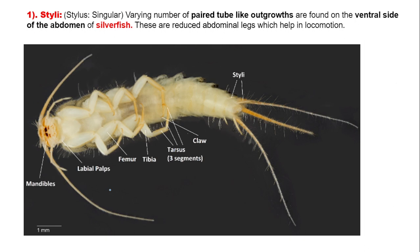A varying number of paired tube-like outgrowths present on the ventral side of the abdomen of the silverfish are known as styli. These are the reduced abdominal legs which help in locomotion.